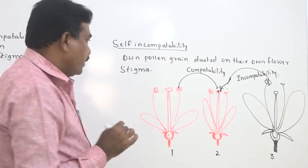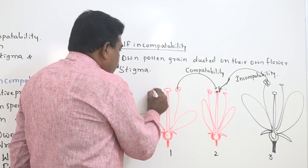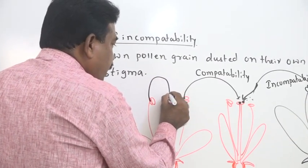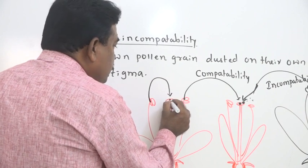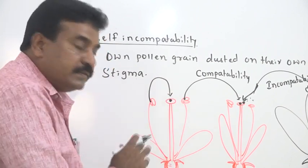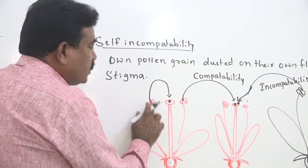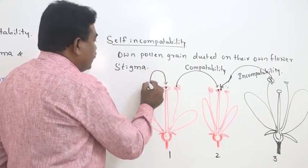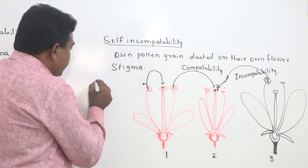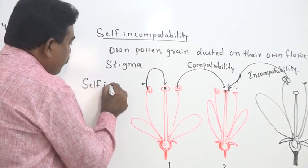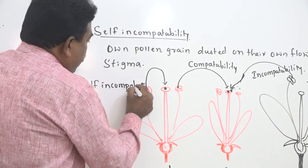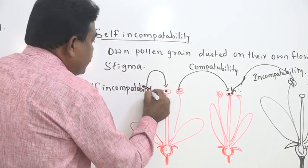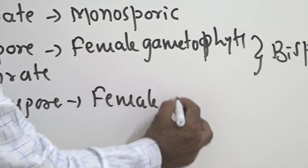We should use the words compatibility and incompatibility rather than 'mismatching.' If pollen grain transfers from the anther of a flower to the stigma of the same flower, the pollen grain may not germinate — that process is called self-incompatibility. All this compatibility as well as incompatibility develops within the female gametophyte.